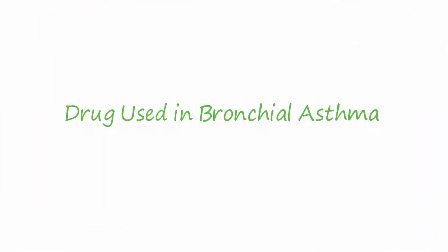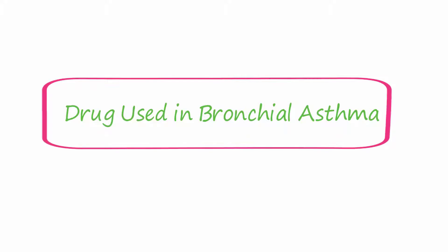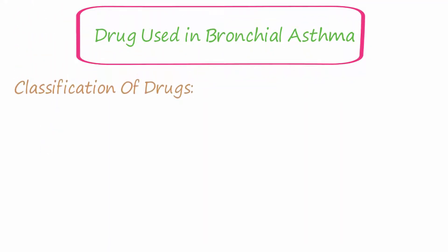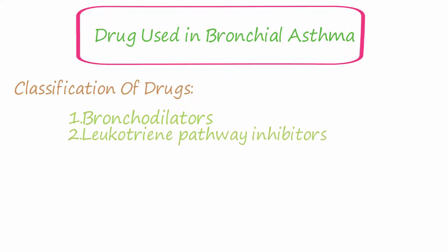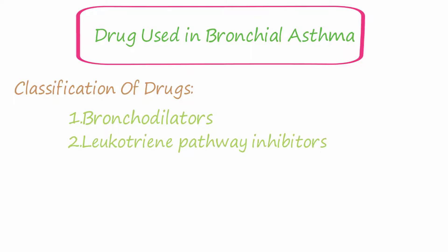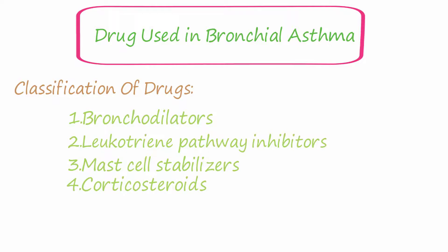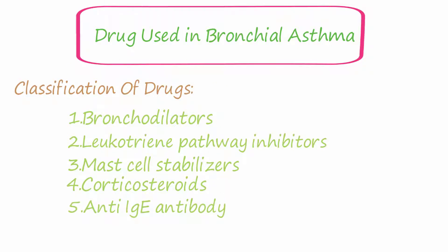Drugs used in bronchial asthma. Classification of drugs: number one, bronchodilators; number two, leukotriene pathway inhibitors; number three, mast cell stabilizers; number four, corticosteroids; and number five, anti-immunoglobulin antibody.